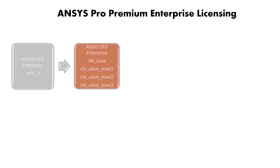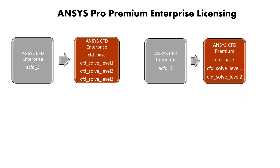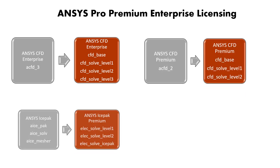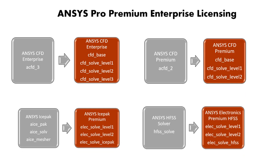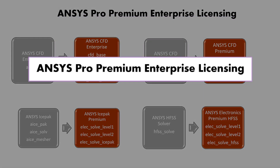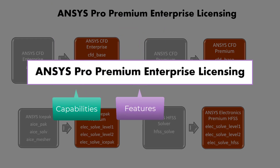We changed our CFD and electronics licenses to a ladder-based format, which is now known as Pro, Premium and Enterprise Licensing. The difference between the three being the capabilities, features and models available in each.